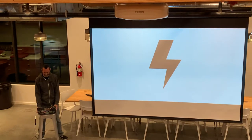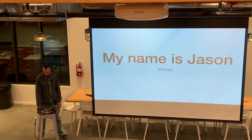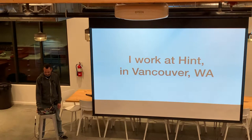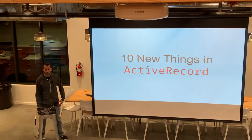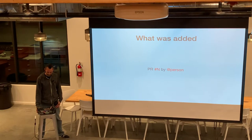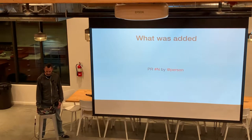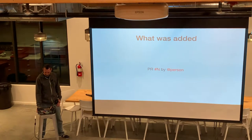Hi, my name is Jason. I'm at Dingus on the Internet and I work at Hint, a consultancy in Vancouver, Washington. I'll be talking about 10 new things in Active Record. For each thing, I'll have a slide that shows what was added, a PR number, and the GitHub username of the person that added it. I really encourage you, if you see something interesting, to go take a look at the PR — it provides a back story for the feature and makes for interesting reading. Disclaimer: I'm probably not going to pronounce anybody's GitHub username correctly.